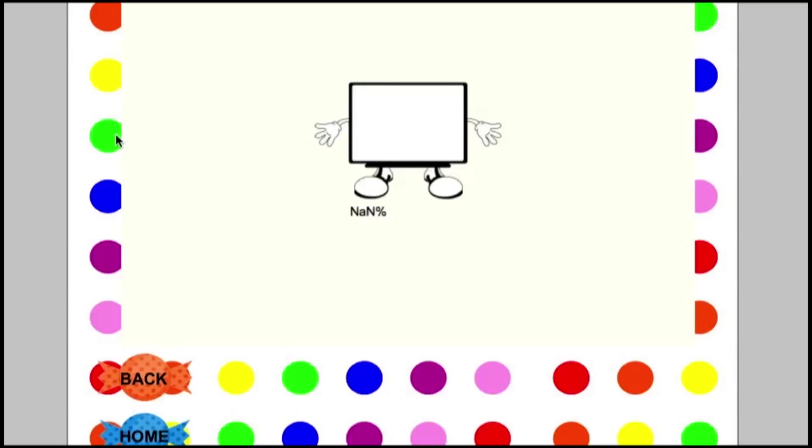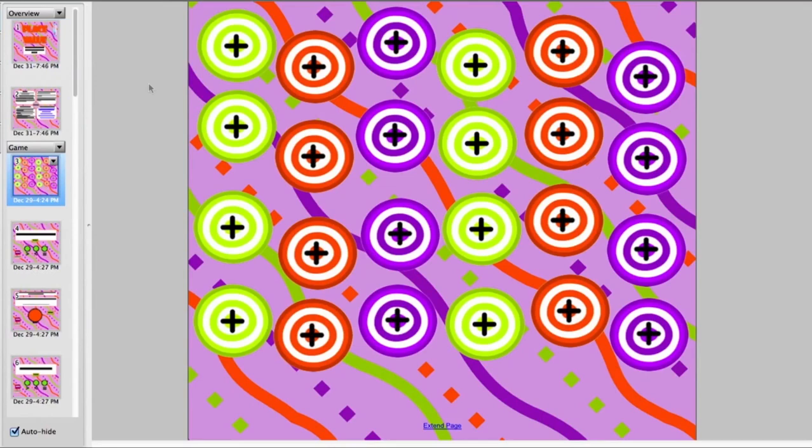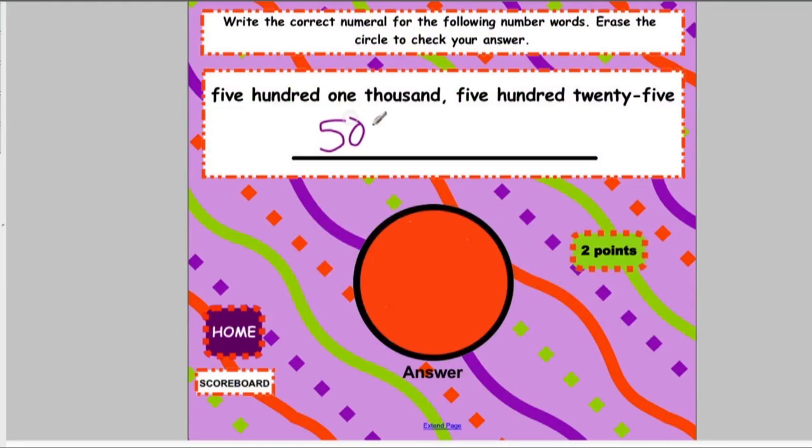In the place value game, students compare numbers of up to seven digits by erasing the correct number. They also write the correct numeral for the number words and erase the big orange circle to check their answer.